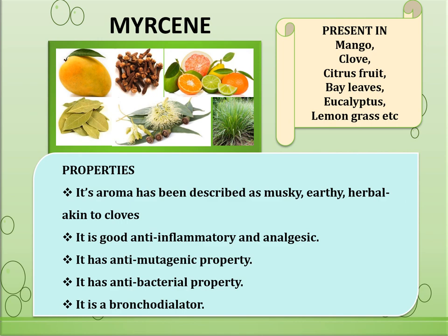Moving on to the next terpene, myrcene. It is a monoterpene and the most common terpene produced by cannabis. Its aroma has been described as musky, earthy, herbal, akin to cloves. Myrcene is found in mango, clove, citrus fruit, bay leaf, eucalyptus, lemongrass, etc. Many claim that eating a fresh mango about 45 minutes before consuming cannabis will result in a faster onset of psychoactivity and greater intensity.